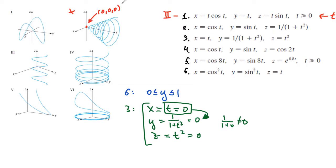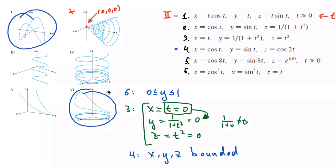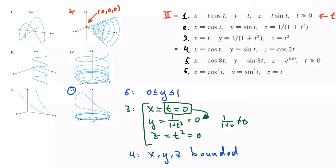Taking a look at the equations, for equation number 4, the x, y, and z components are going to be bounded because they equal cosine, sine, and cosine of t, which are between negative 1 and 1. I need to decide which bounded graph it corresponds to. The key observation is that for equation number 6, the z component is strictly bigger than or equal to 0. But for the first graph, z can be negative. For equation 4, z equals cosine of 2t, which can be positive or negative. So the first graph corresponds to equation number 4.